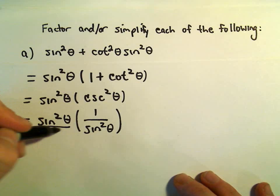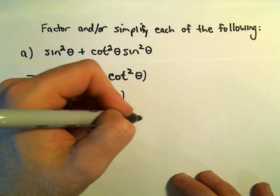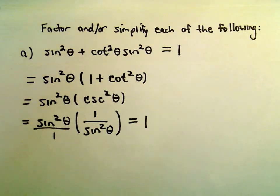So really, we have sine squared of theta over sine squared of theta. And that's simply going to equal positive 1. So this first expression simply reduces to positive 1.